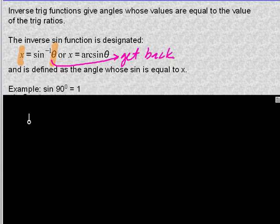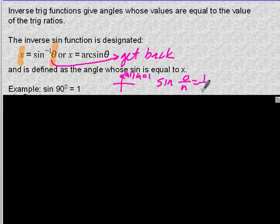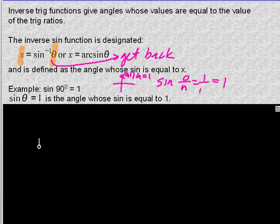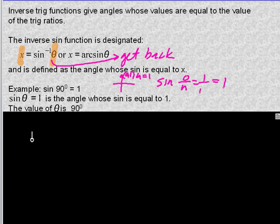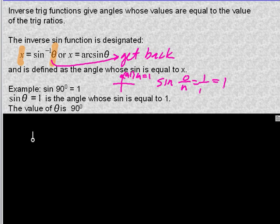For example, we know that sine of 90 degrees is 1. It's a quadrantal angle with coordinates 0, 1, and the hypotenuse equals 1. Sine equals opposite over hypotenuse, so 1 over 1 is 1. If we wanted to turn it into an inverse trig function, we'd say: sine of theta equals 1 — what does theta have to be? The answer is the angle whose sine is equal to 1, which gives us back 90 degrees.